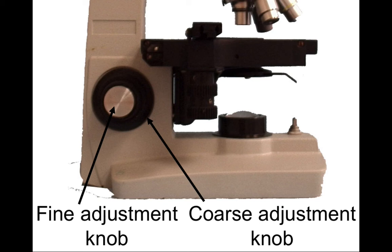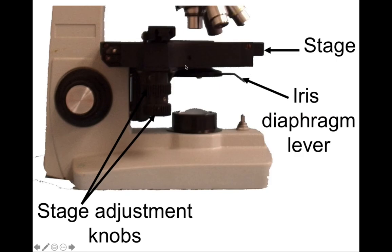The fine adjustment knob is what will be used from that point on. Once you have gotten your microscope slide up to where the focal point of the objective lens is going to be, you will use the fine adjustment knob to make very minor changes in the distance between your stage and the objective lens. This is typically useful as you switch between objective lenses. The stage adjustment knobs move the stage right to left and forwards and backwards, while the coarse and fine adjustment knobs move the stage either further from or closer to the objective lenses.